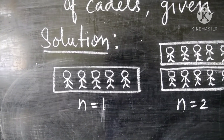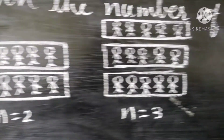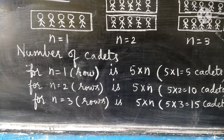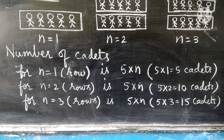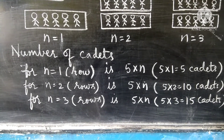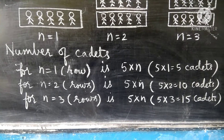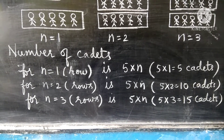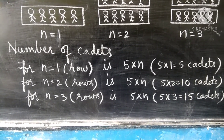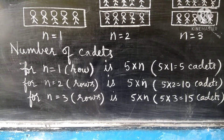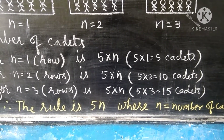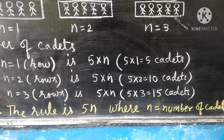Here n equals 1 row, here n equals 2 rows, here n equals 3 rows. Number of cadets for n equals 1 row is 5 into n where n is 1, so 5 into 1 is 5 cadets. For n equals 2 rows, 5 into 2 equals 10 cadets. And for n equals 3, 5 into 3 equals 15 cadets. Therefore, the rule is 5n where n is equal to the number of rows.